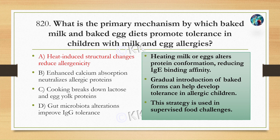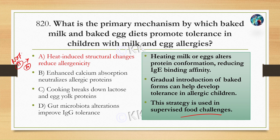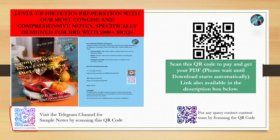The correct option is Option A — heat-induced structural changes reduce allergenicity. Heating of milk or egg alters protein conformation, reducing the IgE binding affinity. Gradual introduction of baked forms of milk and boiled egg can help develop tolerance to allergy in children, generally under supervised food settings. If you have any doubts, ask in the comment section.